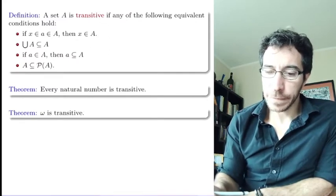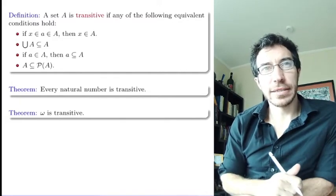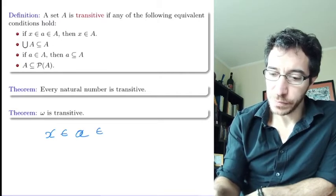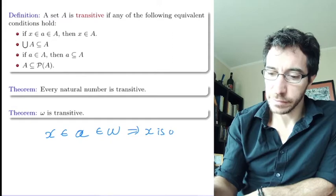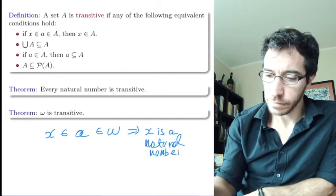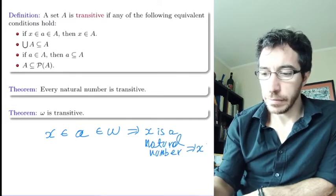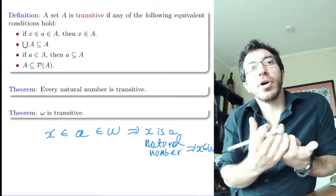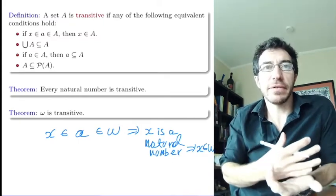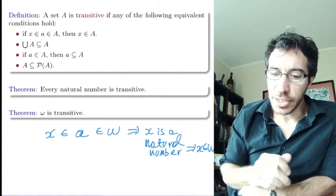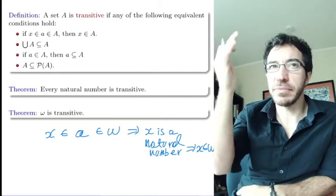Omega itself is also transitive. If x belongs to A and A belongs to omega, then A is a natural number, and the members of a natural number are themselves natural numbers. So x is a natural number and therefore x belongs to omega. Omega is transitive — so the natural numbers are not the only transitive sets; omega is beyond them and is also transitive.